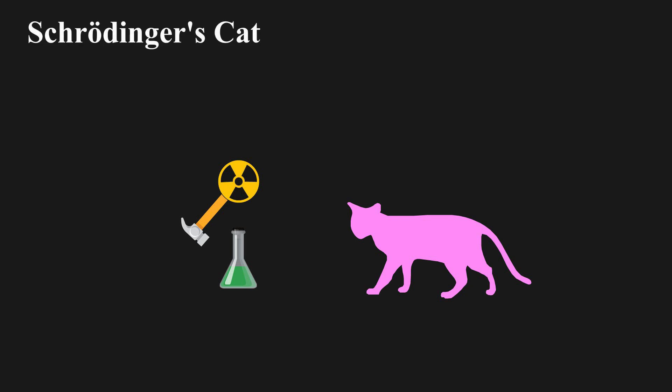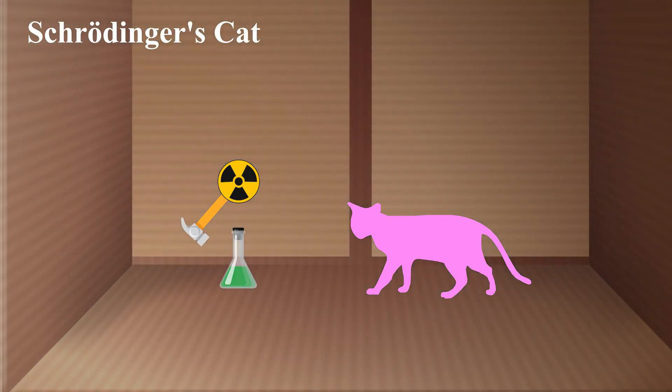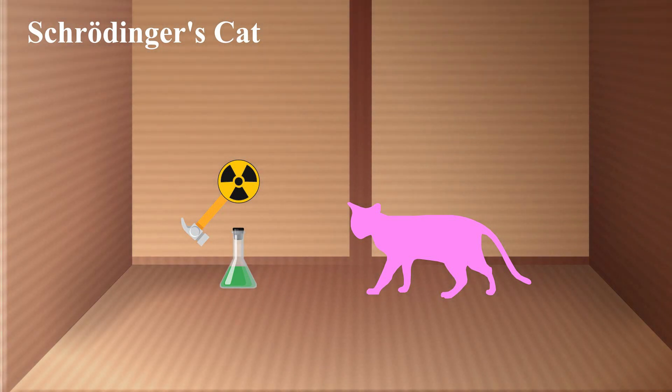In this thought experiment, a cat, a flask of poison, and a radioactive source are placed in a sealed box. The emission of radiation is random, according to quantum mechanics. If the radiation monitor detects radioactivity, the flask is shattered, releasing the poison, which kills the cat.